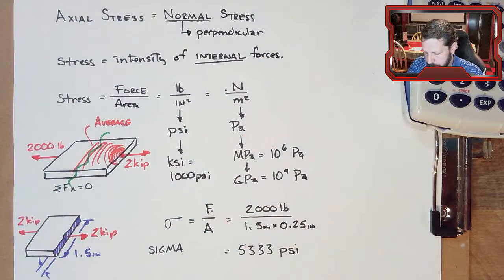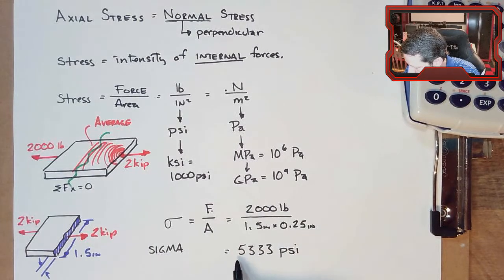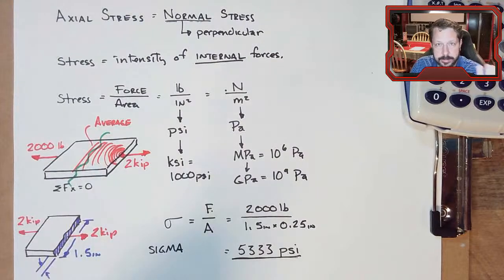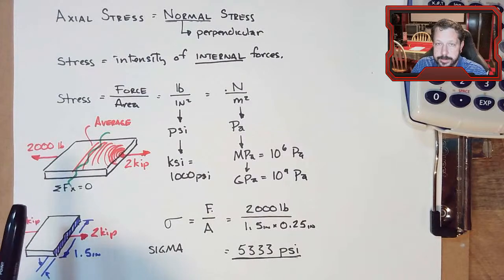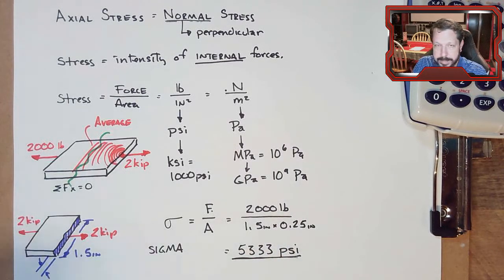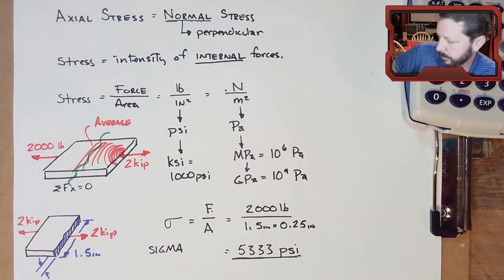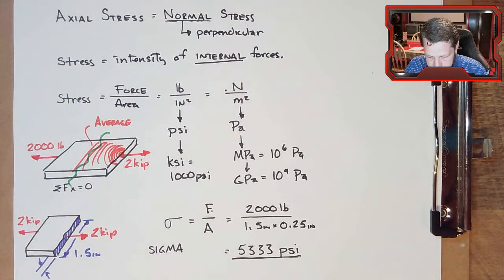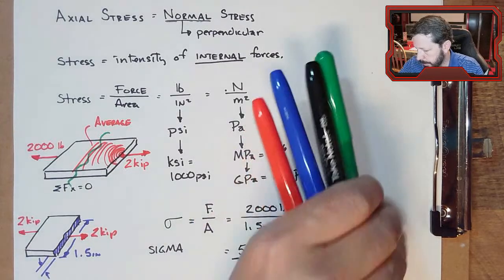We need to decide what this 5,333 PSI means. For a generic steel, the plate wouldn't even begin to permanently stretch until about 36,000 PSI. So 5,000 PSI is not huge for steel, though for weaker materials it could be significant. We'll get into exactly how much room we have before bad things start happening. This was a super simple example; now I want to go to SolidWorks to draw something a bit more complex.